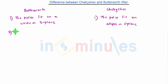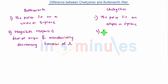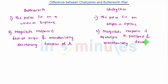The second point is about the magnitude response. The magnitude response is flat at origin and monotonically decreasing function of omega. While in Chebyshev filter, the magnitude response is equiripple in pass band and monotonically decreasing in the stop band.